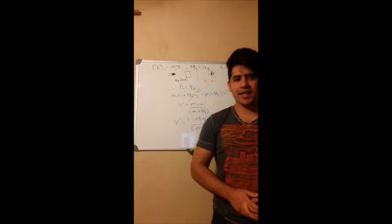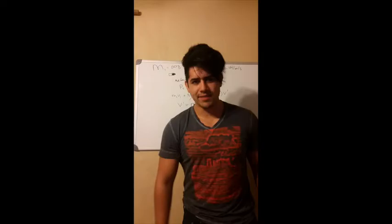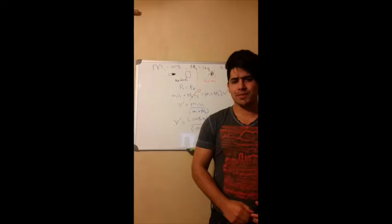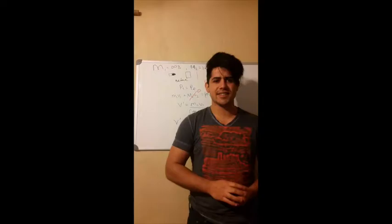Hello everyone, I'm Juan Bermudez from Physics 2325, and I am going to explain the collision between a bullet and a block. A bullet has been fired with a certain velocity and mass, and a moment later the bullet will impact with a wooden block which has a larger mass. After the collision the block will move backward — this event is an inelastic collision, which is when two objects stick together after they collide.